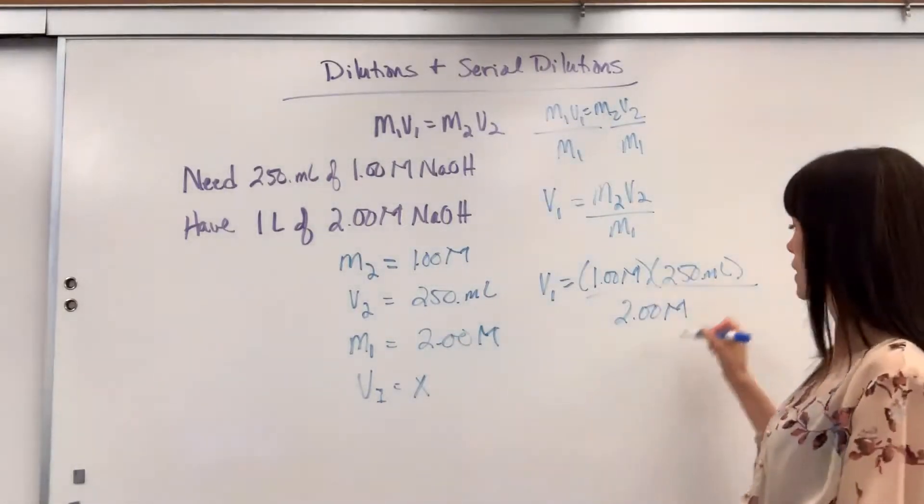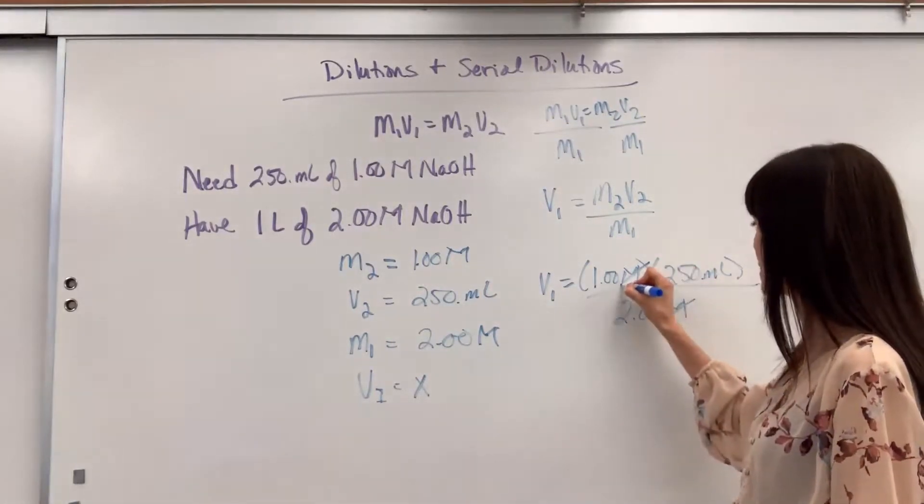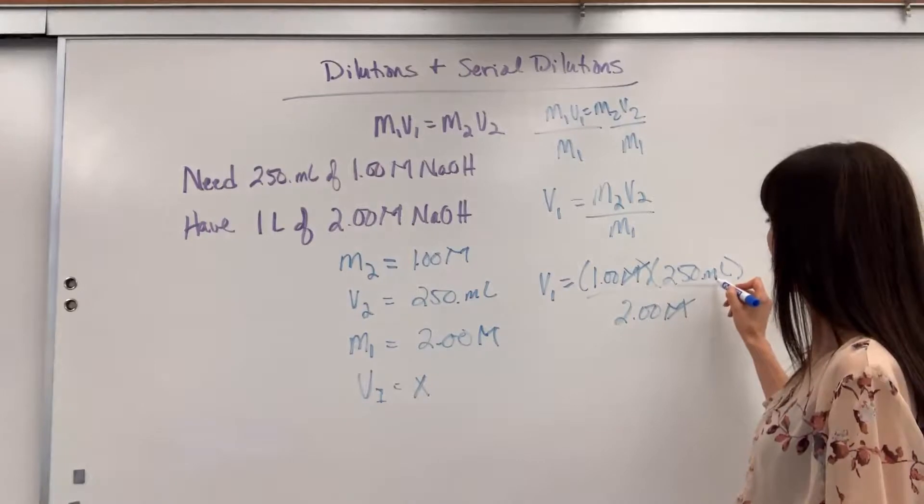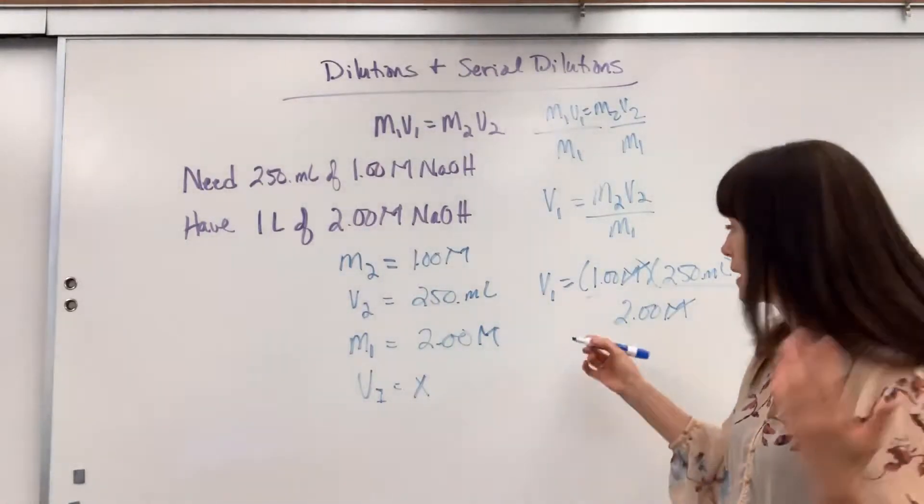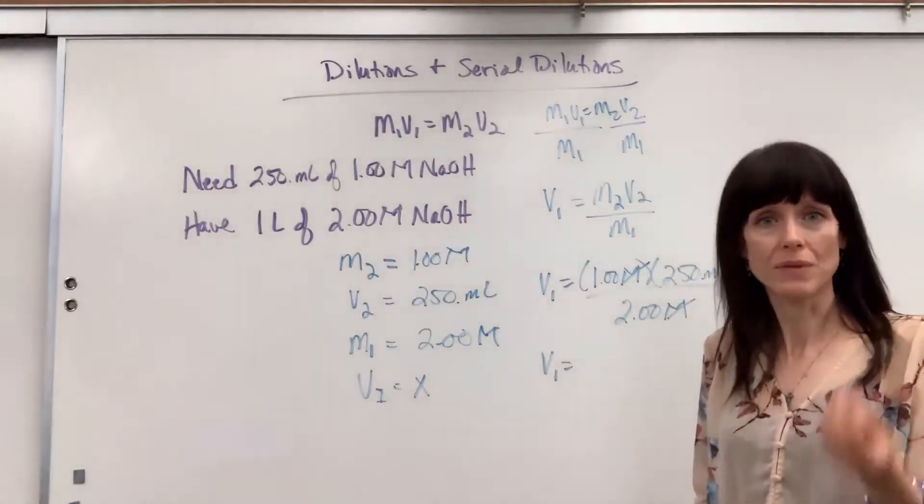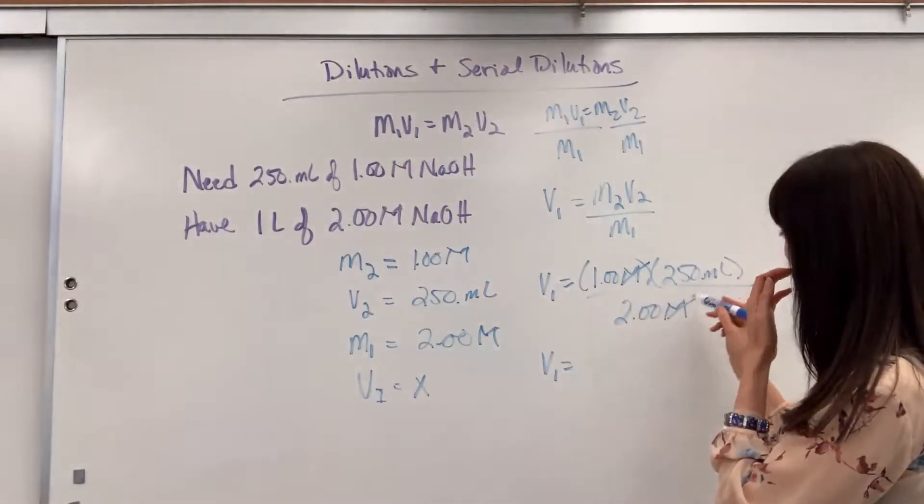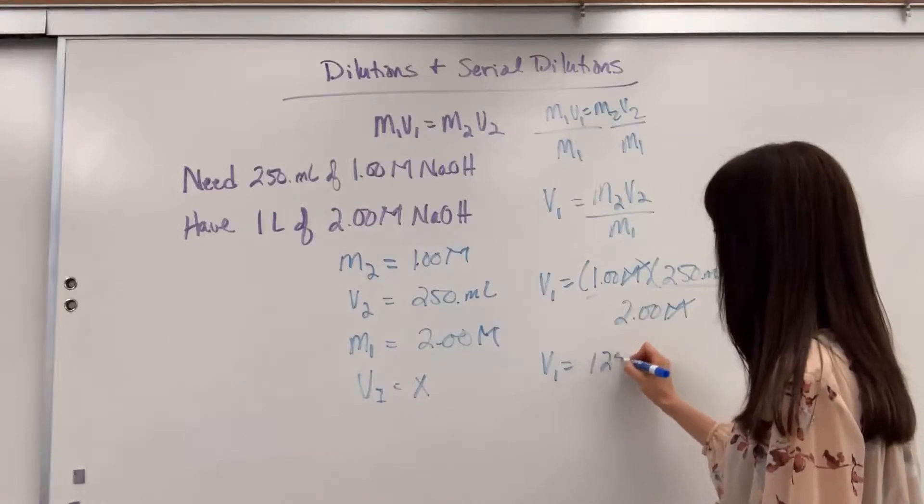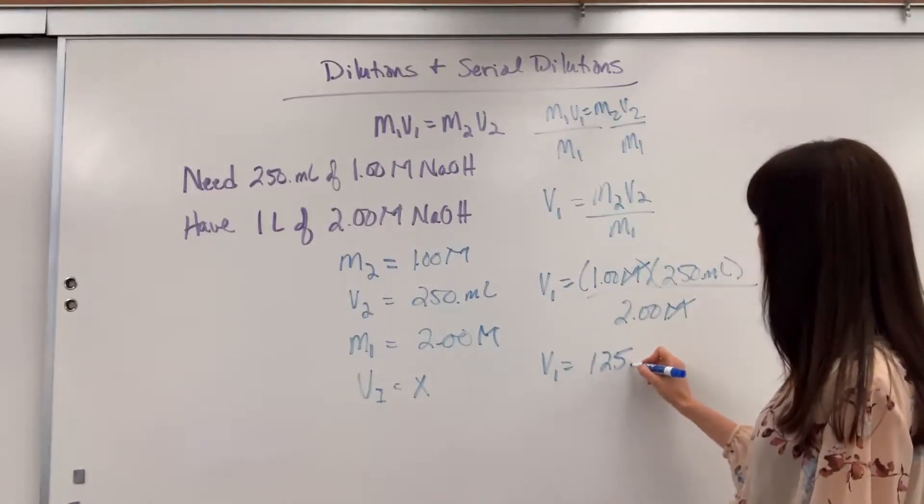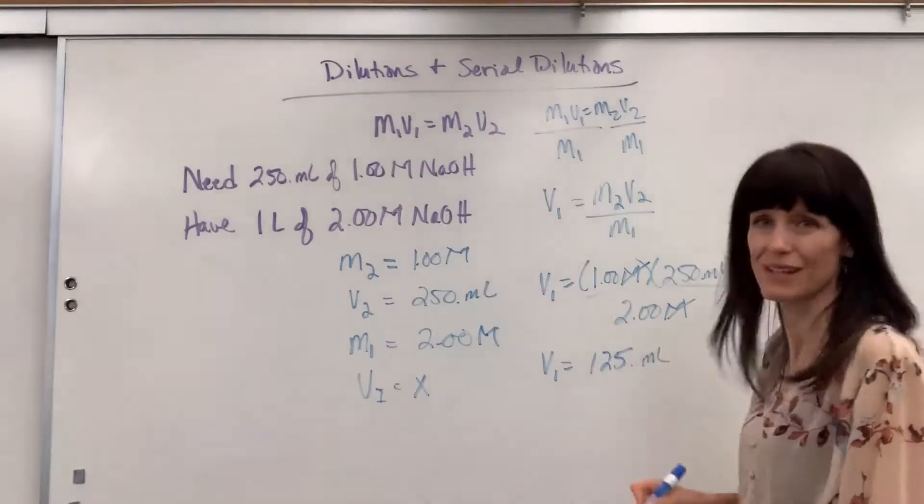Look at the units with me here. Molarity cancels, and we are going to be left with mils. I will know the volume that I have to add in mils. So we'll do one times 250 divided by two is going to give us 125 mils.